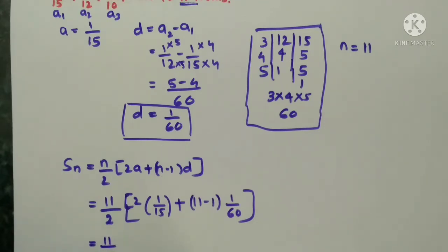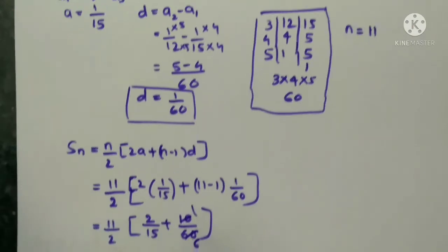Now 11 by 2 into 2 into 1, I can multiply this with the numerator. 2 into 1 into 2 by 15, we got it plus 11 minus 1 is 10. 10 and 60, 10 by 60 I can write it. Now you see 10 ones are 10, 6 I can write it.